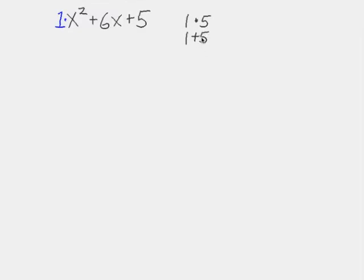So there's the two numbers that will work with my sum and product rule. So my factors would be x plus 1 and x plus 5. Now my roots are going to be the opposite of those two numbers, minus 1 and minus 5.